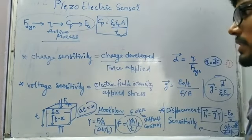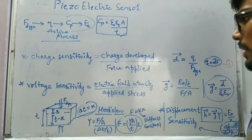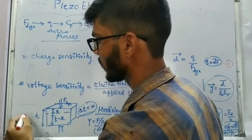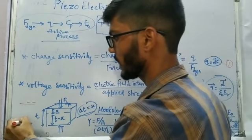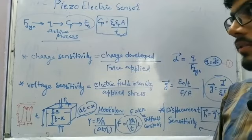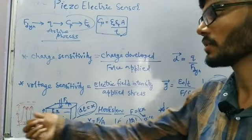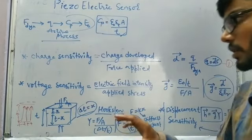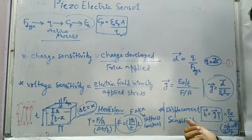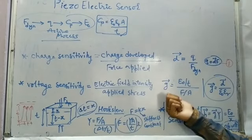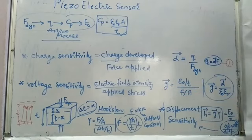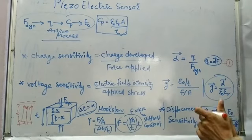The second standard formula is voltage sensitivity, given as electric field intensity divided by applied stress. At the opposite faces, positive and negative charges accumulate, and an electric field exists between them. With crystal thickness T, the electric field intensity is E0/T, and the applied stress is F/A. So voltage sensitivity G = (E0/T) ÷ (F/A).